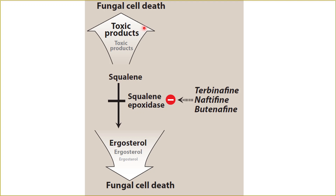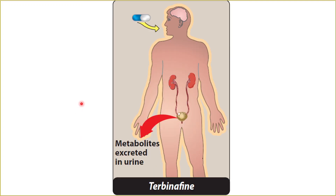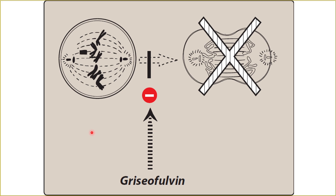Squalene epoxidase inhibitors inhibit squalene epoxidase, which normally synthesizes ergosterol. Instead of synthesizing ergosterol, squalene accumulates and produces toxic products that lead to cell death, and the decrease in ergosterol synthesis also contributes to cell death. Terbinafine and other squalene epoxidase inhibitors can be given orally as systemic antifungals and are excreted in the urine. Griseofulvin disrupts the mitotic cycle by disrupting mitotic tubules, which prevents the proper disposition of chromosomes during cell division. That concludes today's lecture — thank you for your attention and see you next week.